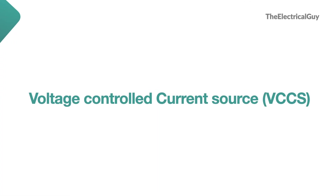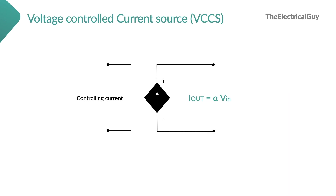The last type of source is voltage controlled current source, or VCCS. When you control the input voltage, the output current will be under control. The constant or multiplying factor is alpha. So alpha times V_input gives you the current output. We are controlling the output current by using the input voltage, hence the name voltage controlled current source. The unit of alpha is amperes per volt.